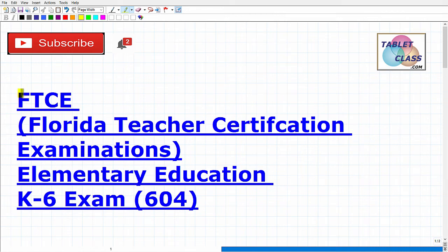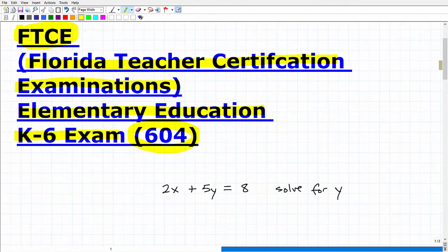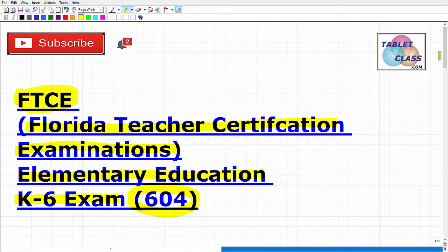Let's talk about the FTCE — Florida Teacher Certification Examinations. The specific exam we're going to be talking about is the Elementary Education K-6 exam. The test code is 604, which deals with the math on this particular FTCE. In this video we're going to take a look at a practice problem you should be able to handle if you're fully prepared for this exam.